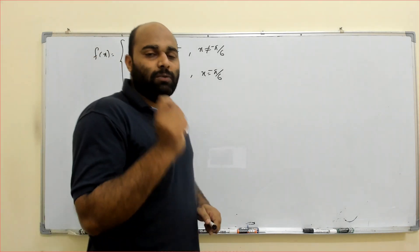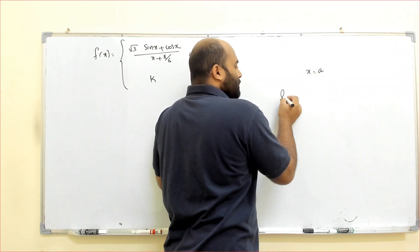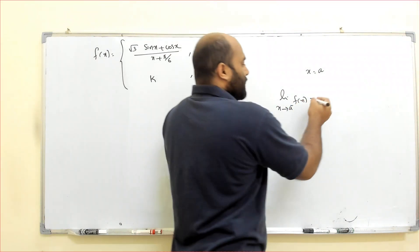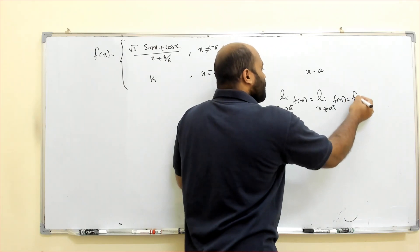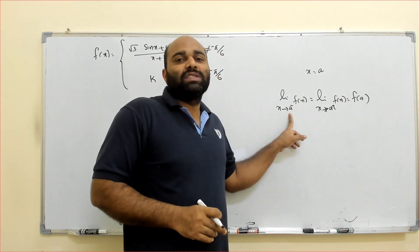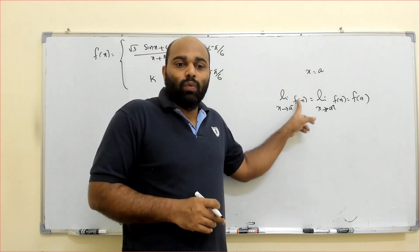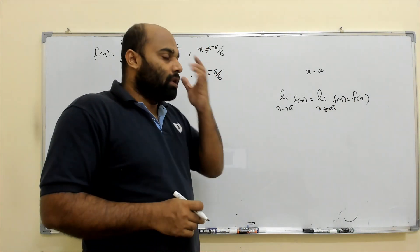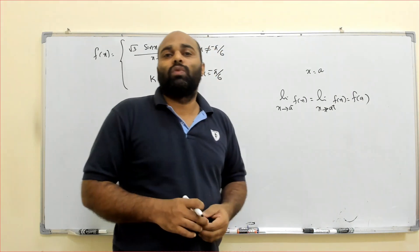A function is continuous at a point A if the left-hand limit — limit as x tends to A⁻ of f(x) — equals the right-hand limit — limit as x tends to A⁺ of f(x) — and both equal f(A). A⁻ means x is on the left side of A, i.e., x is smaller than A. If the first two are equal, we say the limit exists. If all three are equal, we call it continuous.